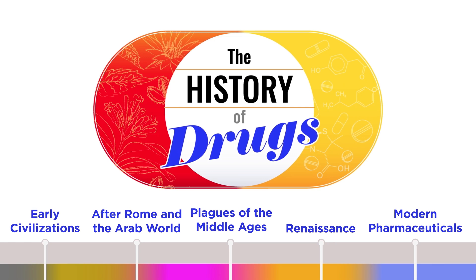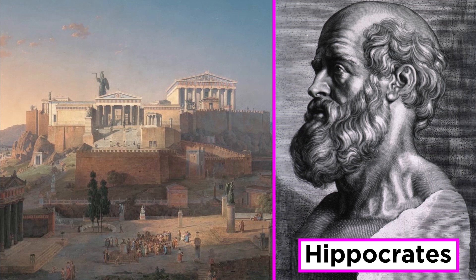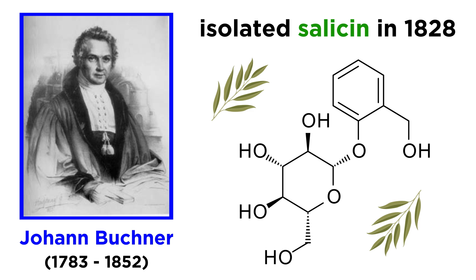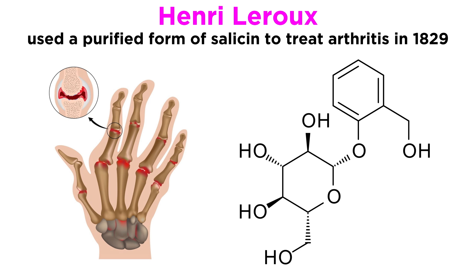This has actually been discussed at great length over in the History of Drugs series, but to briefly paraphrase: Hippocrates was an ancient Greek physician who found that chewing on willow tree bark was effective in reducing fever. It wasn't until 1828 that a compound, salicin, was isolated from those leaves by Johann Buechner, a professor at the University of Munich. By 1829, French pharmacist Henri Leroux was using a purified form of salicin to treat arthritis, but it wasn't well tolerated by patients.